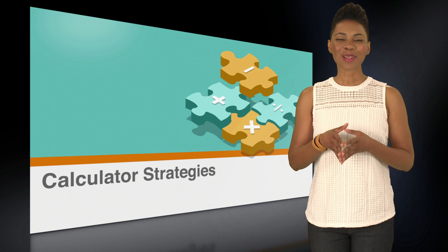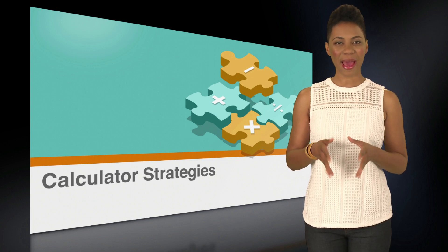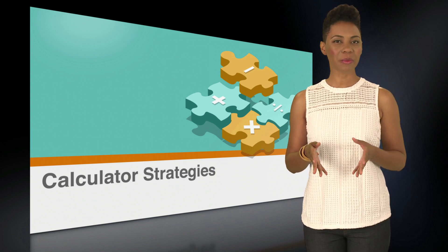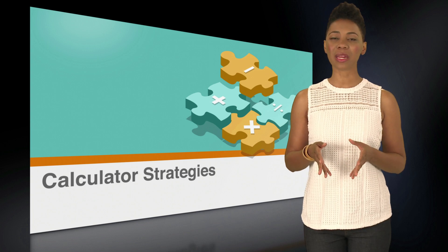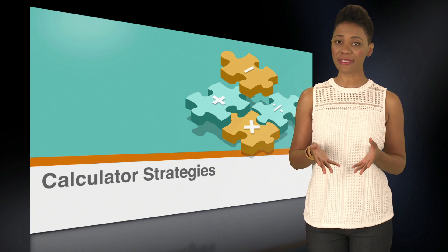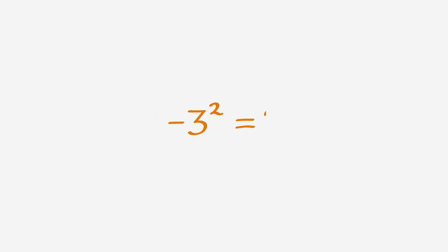Now, let's talk about exponents. Remember that, in the absence of parentheses, only the number or variable that appears immediately before an exponent is affected. Let's look at an equation. Negative 3 squared equals what? In the absence of parentheses, only 3 is squared. Because only 3 comes immediately before the exponent, 2.